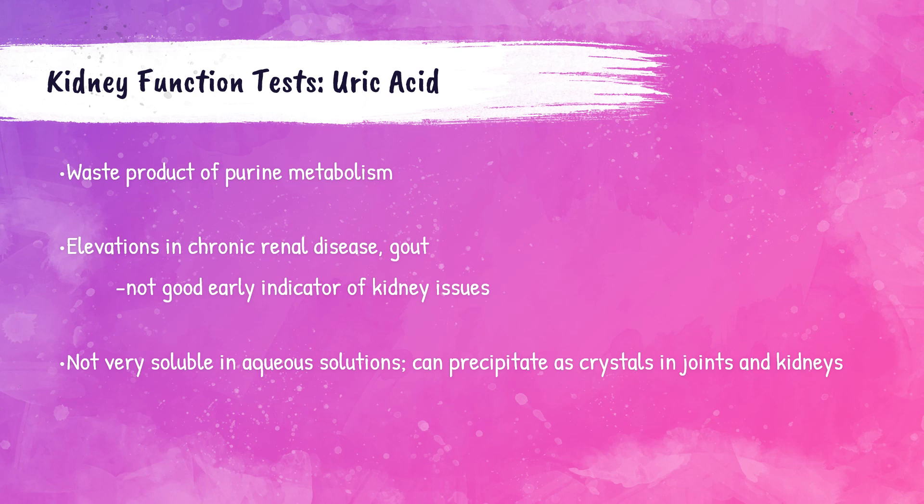Uric acid is a nitrogenous waste formed from the metabolism of purines. Elevations of uric acid in the blood may indicate chronic renal disease. Uric acid is not very soluble in aqueous solutions and can create crystals in the joints and in the kidney. The buildup of these uric acid crystals in the joints causes a type of arthritis called gout. Patients experiencing gout will have elevated levels of uric acid in their blood.